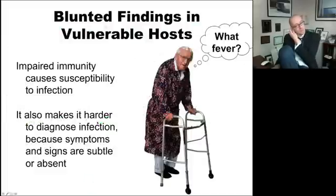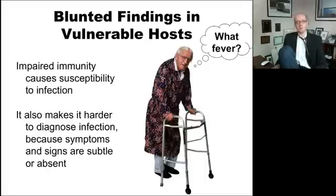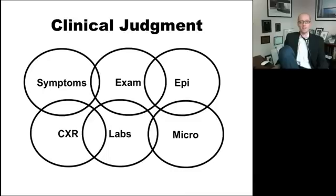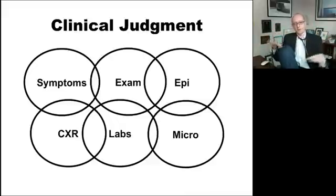Particularly in vulnerable people, pneumonia is harder to see — their symptoms aren't as obvious, they might not mount a white count or other signs. You can trust the chest X-ray more in them, but you have to be more suspicious. Essentially you have a complicated Venn diagram: you have to take their symptoms, exam, epidemiology, chest X-ray, labs, and microbiology and put it together to ask: does it look like pneumonia?